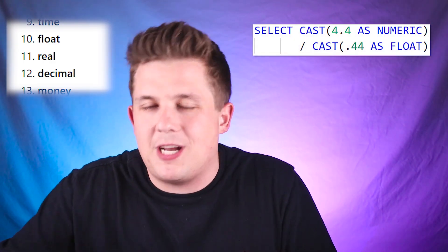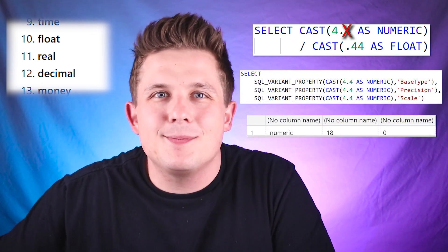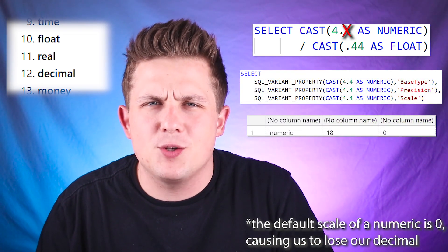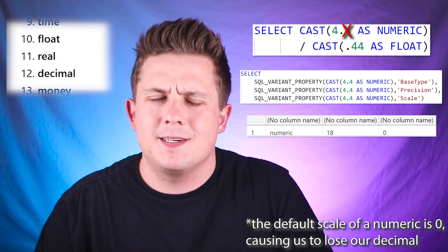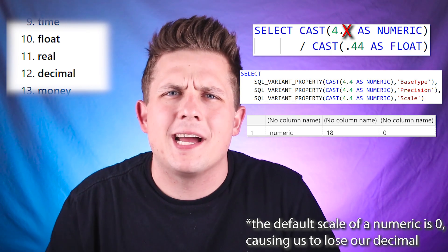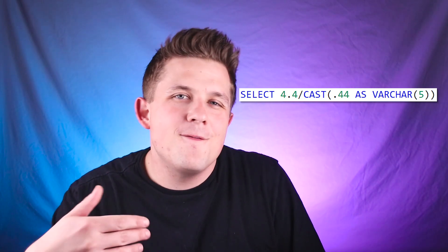The reason this happens is because of the implicit conversion caused by data type precedence. Since float takes higher precedence over numeric, SQL Server chops off the decimal in our 4.4, leaving us with 4 divided by 0.44, which gives us 9.090909.